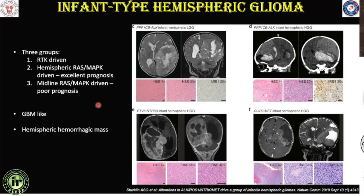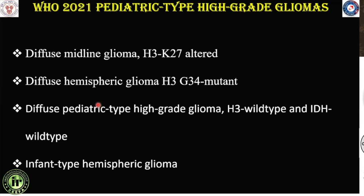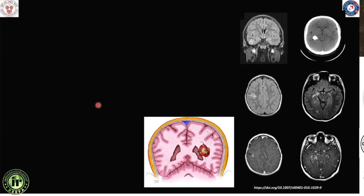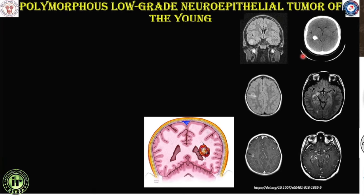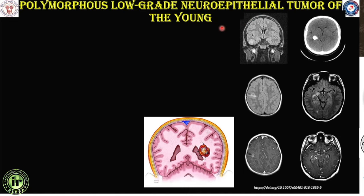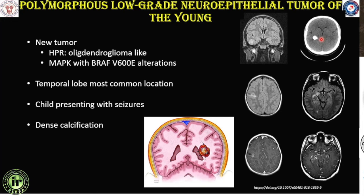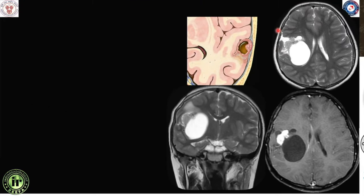An important point: as per the WHO CNS5 2021 classification, the term 'glioblastoma' is no longer valid for pediatric patients — never use this term in a pediatric context. Moving to pediatric low-grade gliomas: one example shows a tumor in the right temporal lobe with dense calcification on CT. This is PLNTY — polymorphous low-grade neuroepithelial tumor of the young. If a child has a low-grade temporal lobe tumor with abundant calcifications and no high-grade features such as mass effect, midline shift, or extensive perilesional edema, consider PLNTY, which has an excellent prognosis.